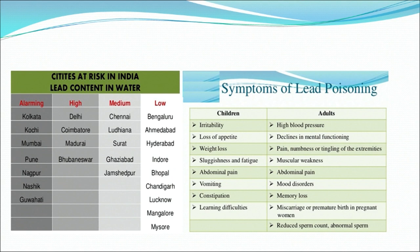Symptoms of lead poisoning in children include irritability, loss of appetite, weight loss, sluggishness and fatigue, abdominal pain, vomiting, constipation and learning difficulties. In adults, symptoms include high blood pressure, decline of mental functioning, pain, numbness or tingling of the extremities, muscular weakness, abdominal pain, mood disorder and memory loss.